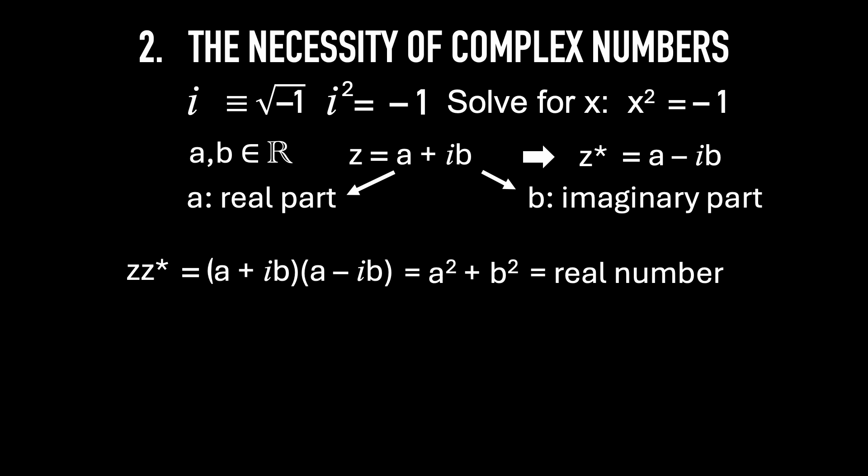If we display a complex number on the plane, a is on the x-axis, b is on the y-axis. Then the complex number z is this vector. The norm squared is equal to a squared plus b squared. That's also z times z star, as we mentioned earlier. So that's complex numbers.